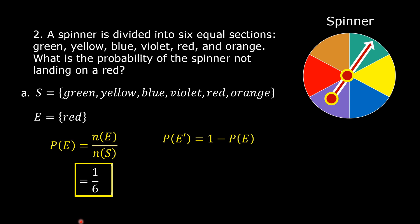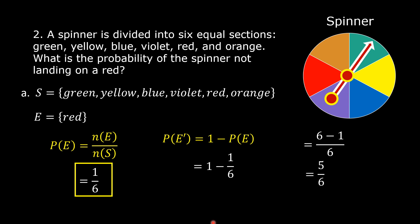The probability of the complement of the event is equal to 1 minus the probability of the event. So this is now equal to 1 minus 1 over 6. This is understood to be 1 over 1. The least common denominator is 6. So this is equal to 6 minus 1 over 6, which equals 5 over 6. So the probability of the complement of the event, or the probability of the spinner not landing on red, is equal to 5 over 6.